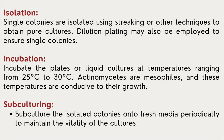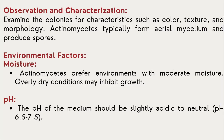Subculturing: the actively growing colonies are subcultured into fresh media periodically in order to maintain the viability of the culture. Actinomycetes are very diverse — they produce different colors, different textures, and their morphological characteristics are completely different compared to bacteria and fungi. Actinomycetes typically form aerial mycelium and produce spores, which is a salient feature of fungi. Environmental conditions: actinomycetes prefer an environment with moderate moisture, and pH conditions are between acidic to neutral in the range of 6.5 to 7.5.